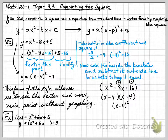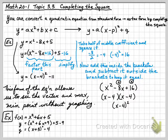To complete the square, we take half of the middle term. Half of 6 is 3, and 3 squared is 9. So we add 9 inside the brackets and subtract 9 outside the brackets. Now x squared plus 6x plus 9 factors into x plus 3 squared, and the outside simplifies to minus 4. So the vertex form is y equals x plus 3 squared minus 4.